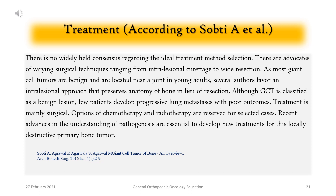There is no widely held consensus regarding the ideal treatment method selection. There are advocates of varying surgical techniques ranging from intralesional curettage to wide resection. As most giant cell tumors are benign and located near a joint in young adults, several authors favor an intralesional approach that preserves the anatomy of bone. Although GCT is classified as a benign lesion, a few patients develop progressive lung metastases with poor outcomes. Treatment is mainly surgical; options of chemotherapy and radiotherapy are reserved for selected cases. Recent advances in understanding pathogenesis are essential to develop new treatments for this locally destructive primary bone tumor.